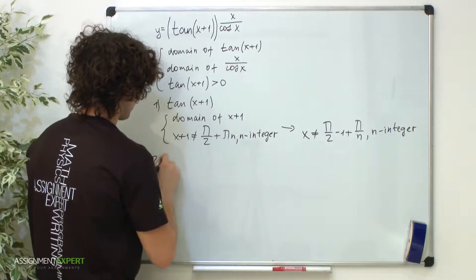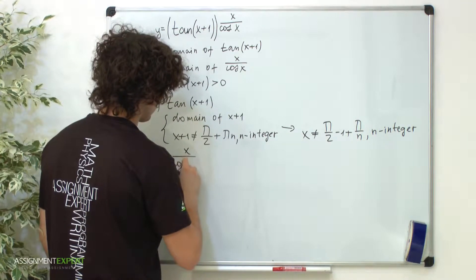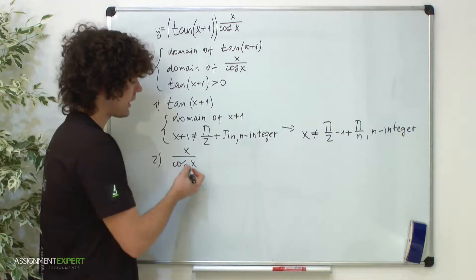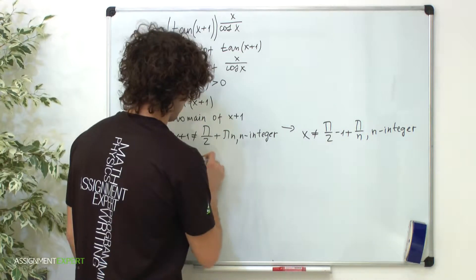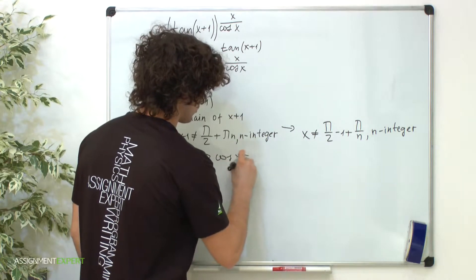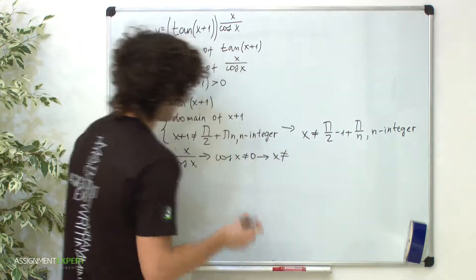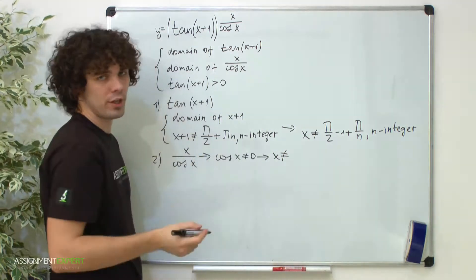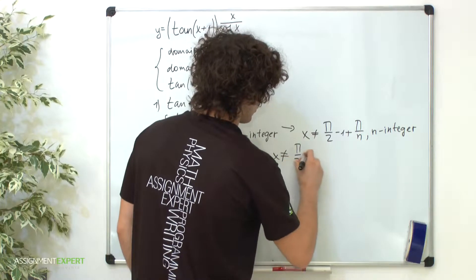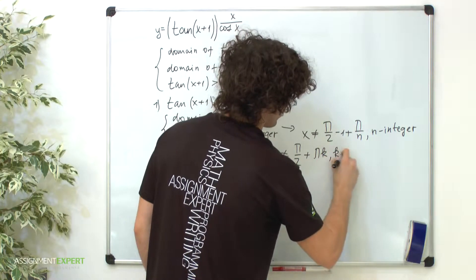Now the second condition: the domain of x over cosine of x. This is a fraction, therefore cosine of x is not equal to 0. Therefore x is not equal to π/2 plus πk where k is an integer.